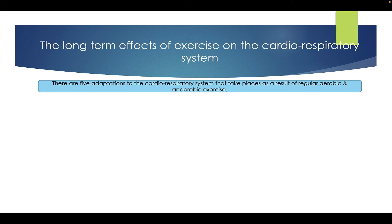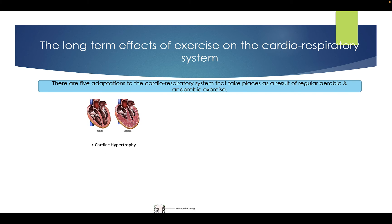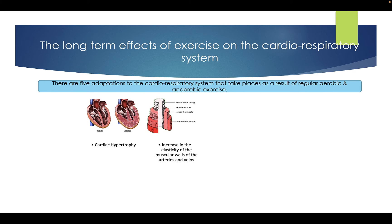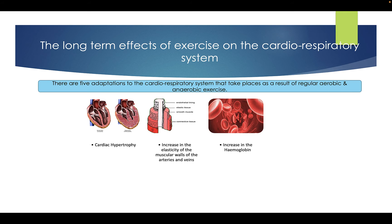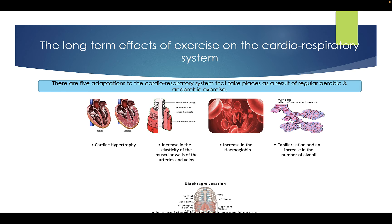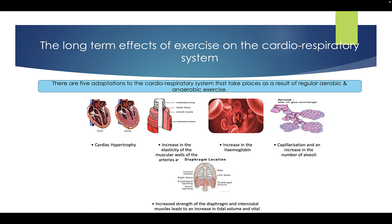Long-term effects on the cardiorespiratory system. There are five adaptations to the cardiorespiratory system that take place as a result of regular aerobic and anaerobic exercise: cardiac hypertrophy, an increase in the elasticity of the muscle walls and arteries and veins, increase in haemoglobin, capillarization and an increase in the number of alveoli, and finally an increased strength of the diaphragm and intercostal muscles leading to an increase in tidal volume and vital capacity.